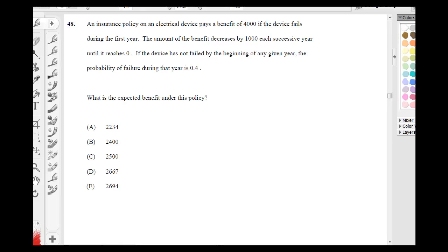If the device has not failed by the beginning of any given year, the probability of failure during that year is 0.4. So, probability of failure is 0.4.